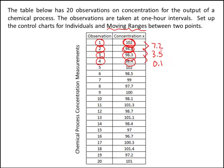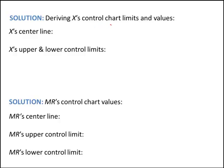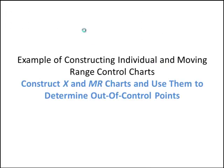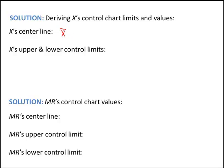Let's talk about how we're going to set up these control charts. For the X control chart, or the individual control chart, the center line is just X-bar, which is the average of all the individual values — averaging 102, 94.8, 98.3, and so on. That will be the center of the individual control chart. I've already calculated this: it's 99.1. Now we need the upper and lower control limits, and we're going to start at the center line and then go up or down three standard deviations for the individuals.